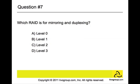Question number seven. Which RAID is used for mirroring and duplexing? Is it level 0, level 1, level 2, or level 3? The answer is level 1. RAID level 1 is usually referred to as mirroring. It provides redundancy by duplicating all the data from one drive on a second drive, so that if one of the two hard drives fails, no data is lost.